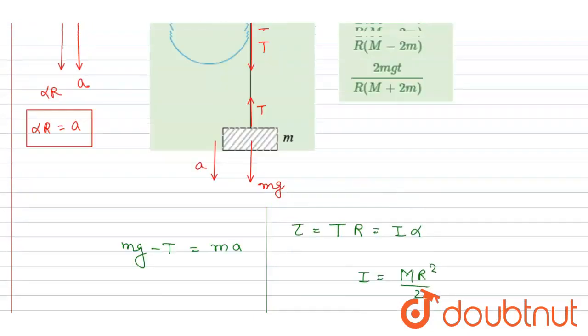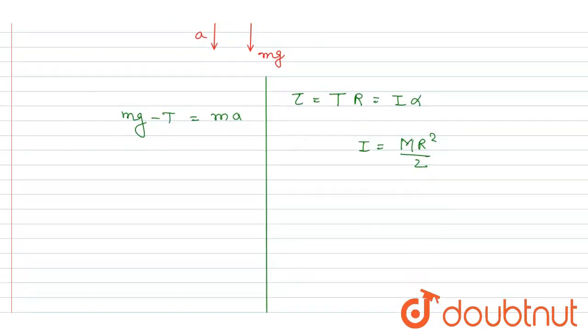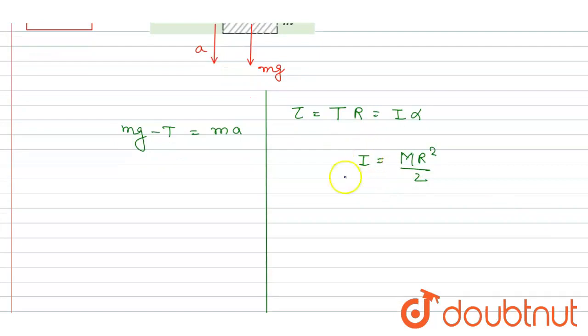And if you see, we are interested in calculating the angular speed. So let us calculate the alpha. If we get the alpha, we can get the omega also. Right? So if you see, we got this I equals MR squared by 2. You can put it here.